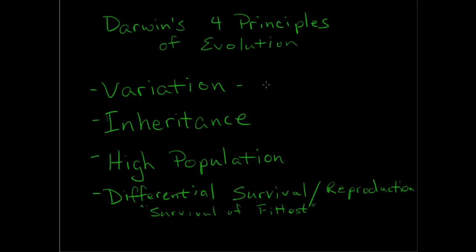And then finally, differential survival and reproduction. This is simply that the individuals with the characteristics that are best suited for the environment, in our example it was the black moths because of their color, will most likely be able to survive and reproduce and make more offspring that will be able to survive.